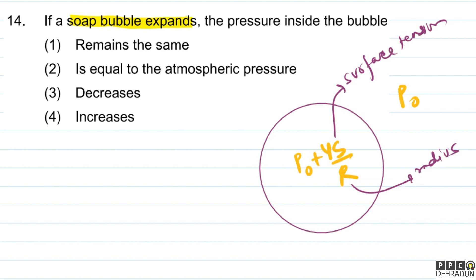We can understand that if radius increases (soap bubble expands), then the term 4S/R decreases. Therefore, the total inside pressure decreases. Inside the bubble, it decreases.